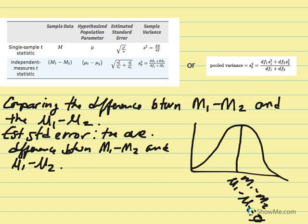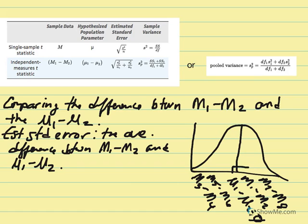Theoretically, if we had access to all samples — say sample three minus sample four, and sample five minus sample six — this would enable us to construct a distribution of sample means. When we take those differences, we compare them to the center difference, which is zero. The null says there's no difference between the two. The estimated standard error is the average of those differences — the differences between the sample means in relation to the center difference, which represents the null and the two population mean differences.